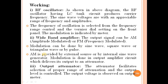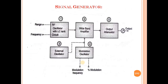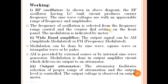AM, that is amplitude modulation, can be provided by an external source or by an internal sine wave generator. The modulation is done in the output amplifier circuit, which delivers its output to an attenuator.